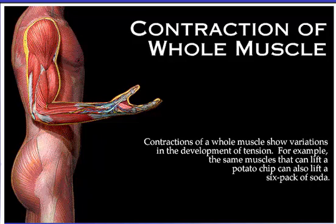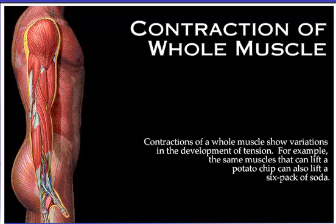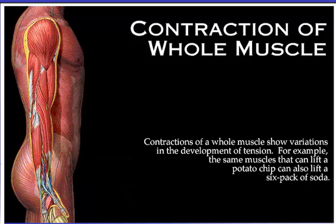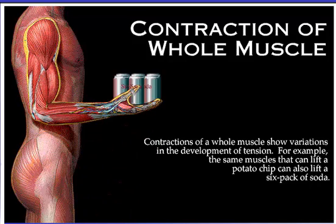Contractions of a whole muscle show variations in the development of tension. For example, the same muscles that can lift a potato chip can also lift a six-pack of soda.